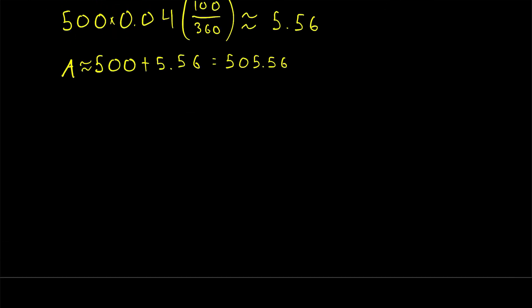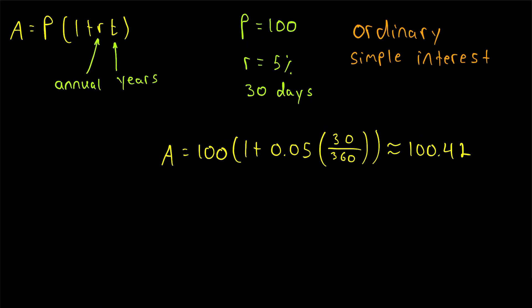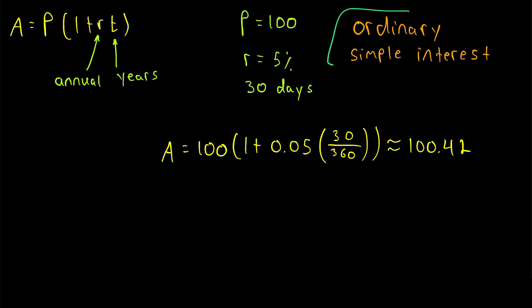So that's what ordinary simple interest is and how we calculate and work with it. Remember that ordinary simple interest is just a convention that's sometimes used when calculating with annual simple interest rates, in which we convert a number of days to a number of years by dividing the number of days by 360.